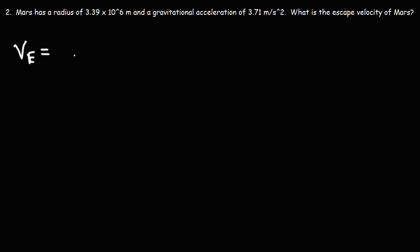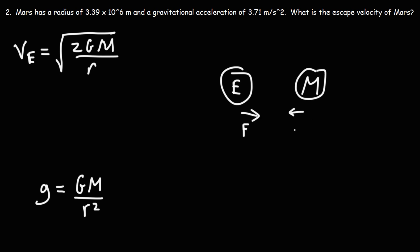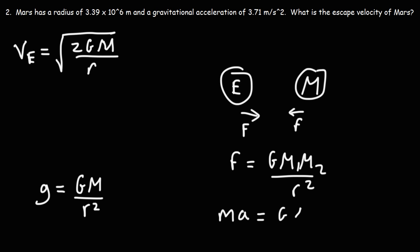The formula we previously had was that escape velocity equals the square root of 2GM over R, and we could still use that, but we're not given the mass of Mars. It turns out we can use a different variation. Gravitational acceleration is equal to GM over R squared. To derive that: if you have two objects like the Earth and the Moon, there's a gravitational force pulling them together equal to Gm₁m₂ over R squared. Setting that equal to the net force ma and canceling one of the masses, you get that acceleration equals G times M over R squared.